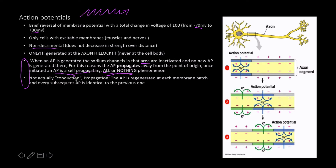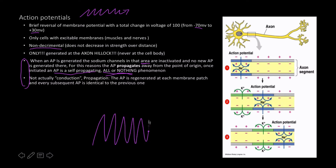It's not conduction — it's propagation. An action potential is generated at each membrane patch, and every subsequent action potential is identical to the previous one. What we see is depolarization happening in these wave-like shapes, each spike being a separate event. Each segment of the membrane undergoes its own massive depolarization event, which causes the next segment to have that exact same massive depolarization event, and it just moves along the axon.